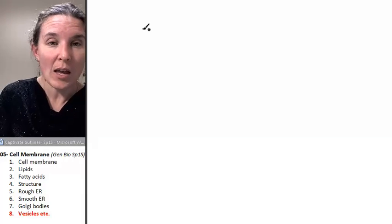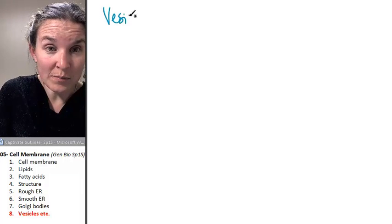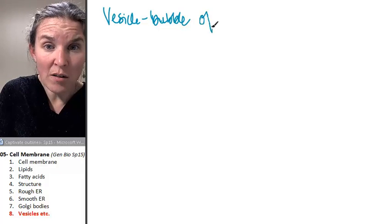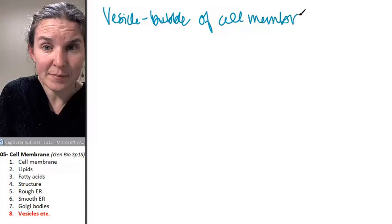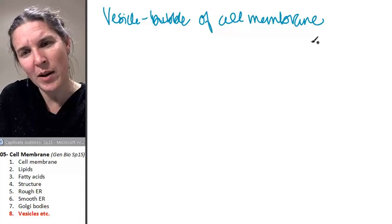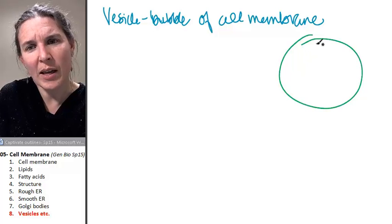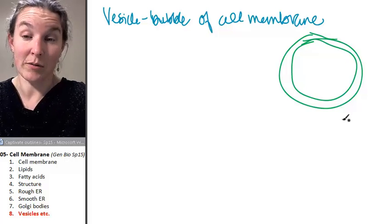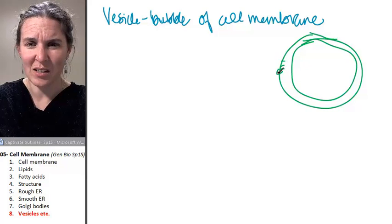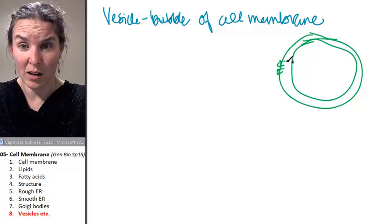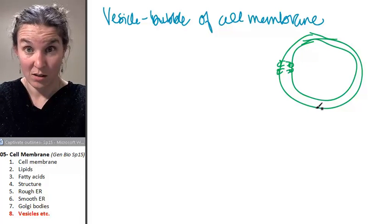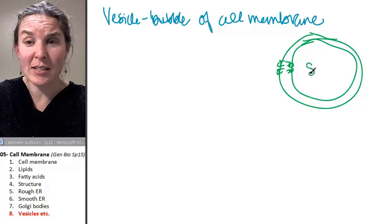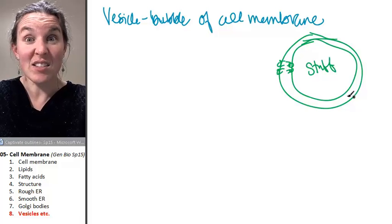So let's make a list. First of all, a vesicle is just a bubble of cell membrane. I'm going to show you my phospholipid bilayer in not very lovely format. Here's my bilayers. It's a phospholipid bilayer, just trust me. And so inside here is stuff.